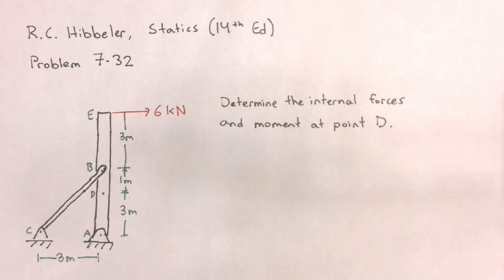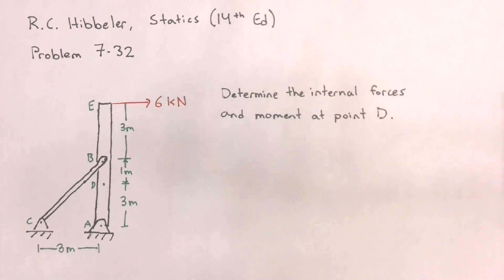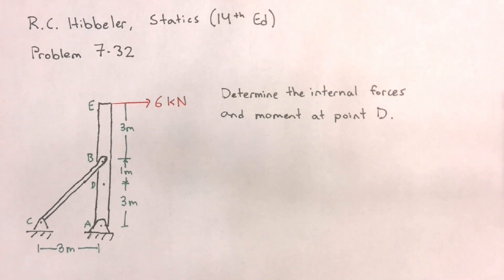For this problem, we want to determine the internal forces and the internal moment acting at point D. In other words, we want to find the normal force, the shear force, and the bending moment at that point. I like this problem because most of the other internal forces problems we've dealt with have had horizontal bars, which means normal force was always in the x-direction and shear force always in the y-direction. In this case, our normal and shear forces will have different directions.